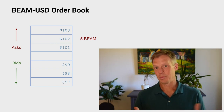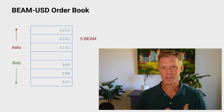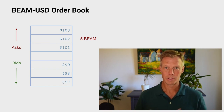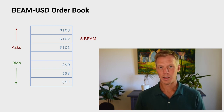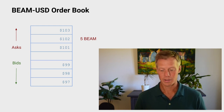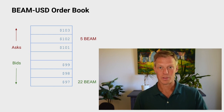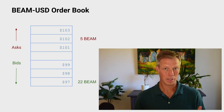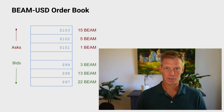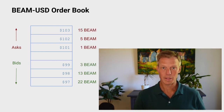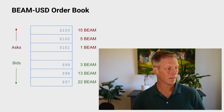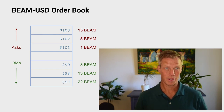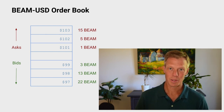Since there isn't a buyer at that price, the exchange places my order on the order book at the $102 price level. Now let's say there's somebody else who would like to buy some Beam coins but only at $97 per coin — they think that's the more correct price and they have enough money to buy 22 of them, so they place an order to buy 22 Beam coins at $97. That would also get placed on the order book. The lowest asking price is known as the best ask, the highest bid is known as the best bid, and the difference between the two is called the spread.